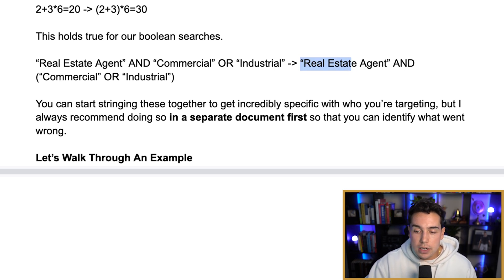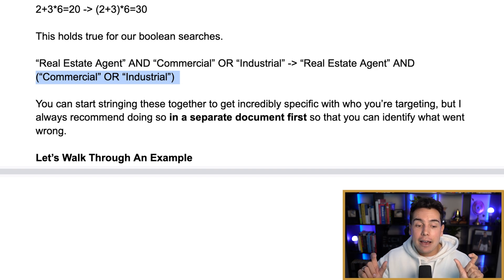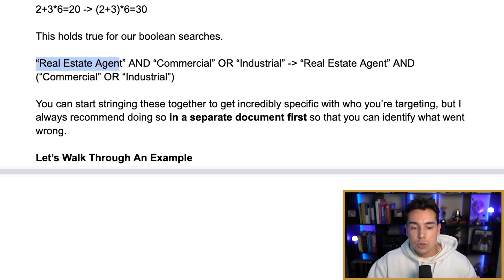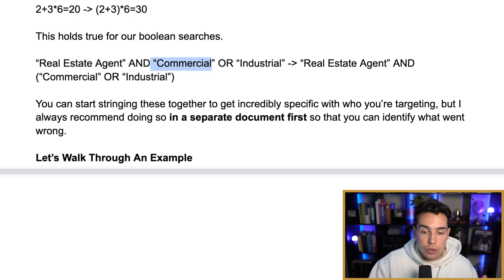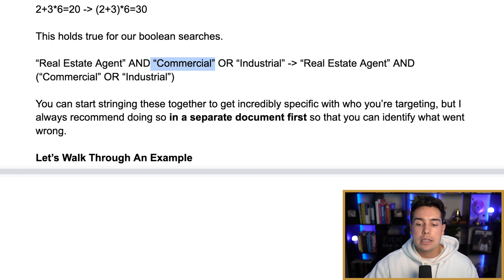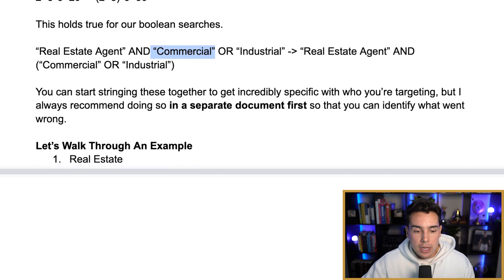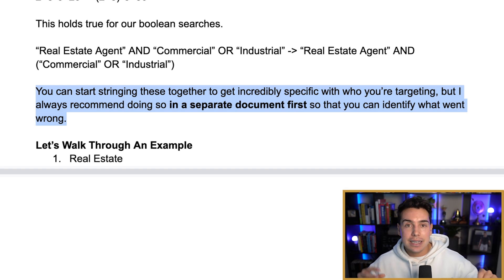If instead I write "real estate agent" AND (commercial OR industrial), I'm saying I want people who have "real estate agent" in their title AND they need to have either commercial or industrial in addition to that. Without parentheses, I might just be pulling anyone with "industrial" even if they have no connection to real estate at all. By adding parentheses, real estate agent has to be there, and either commercial or industrial must also be present. You can start stringing these all together — ANDs, ORs, parentheses, quotation marks — to get incredibly specific with whom you're targeting.